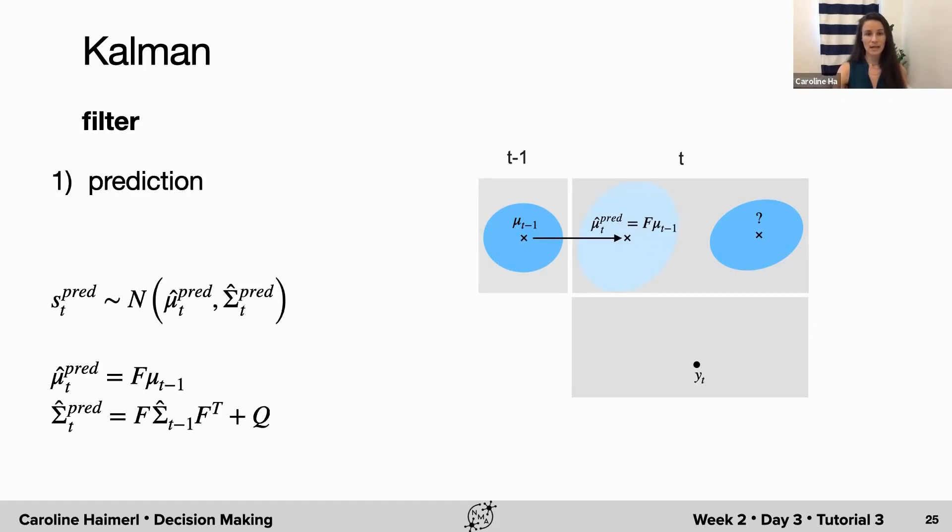First, we have prediction. Here we operate exclusively in the latent space, using the prior. We simply project the latent distribution at the previous time point one time step forward using the transformation matrix F. Again, because the initial distribution is Gaussian and because we're simply adding Gaussian noise, we know the distribution will be Gaussian again. We just need to find the mean and the covariance, which is straightforward. The mean will be F times the mean at the previous time point, and the same for the covariance, except that for the covariance, we need to add the noise covariance of the Gaussian noise that is added at time point t.